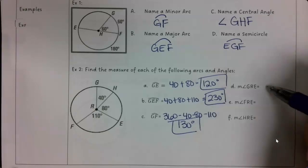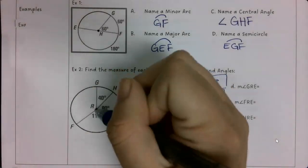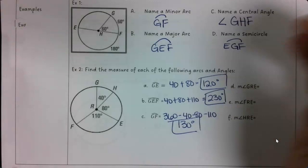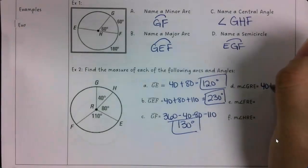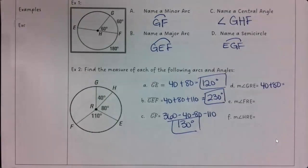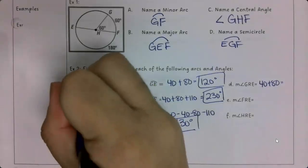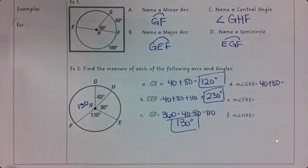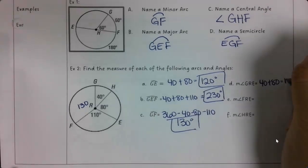Okay, D is the measure of angle GRE. So from here, here, to here, I need to add 40 and 80 together. Which gets us 120.